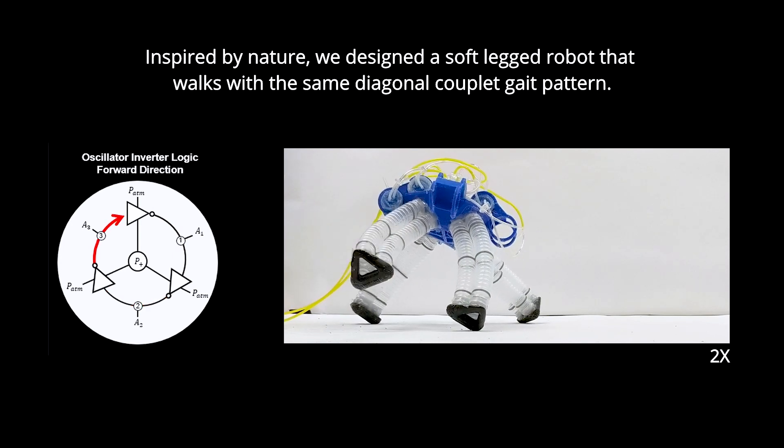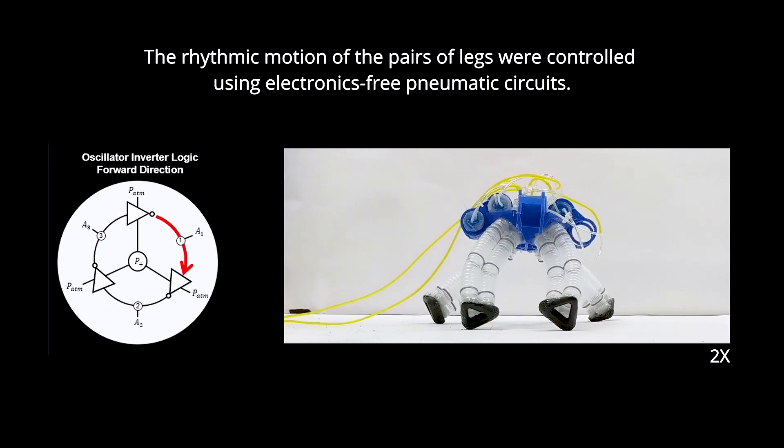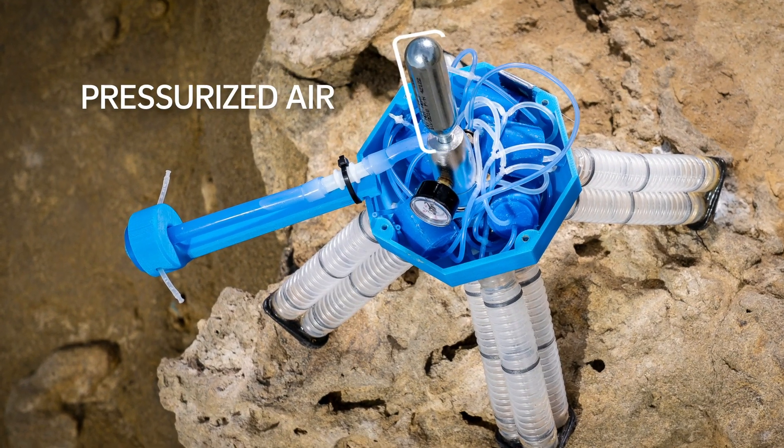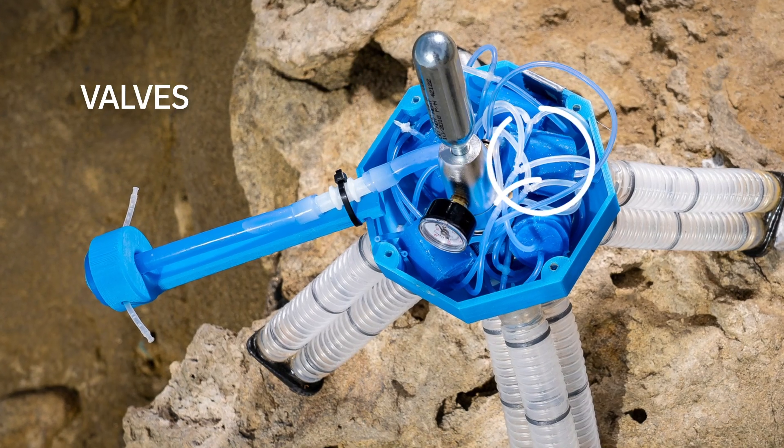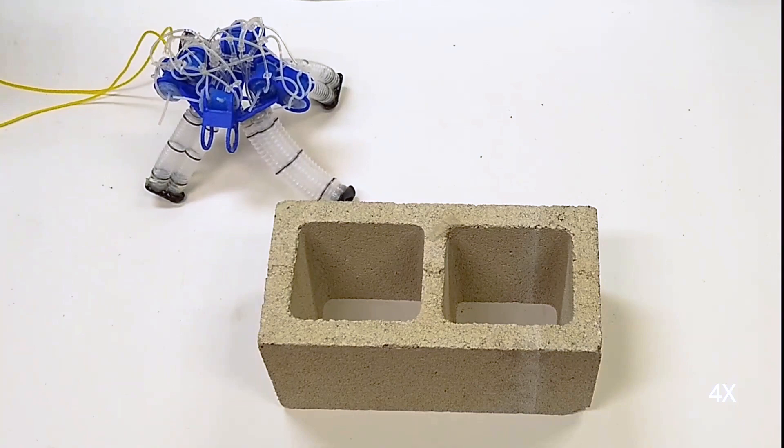The movement of its four legs is driven by a series of valves that lead pressurized air in and out in specific sequences. A custom valve allows the robot to change directions.